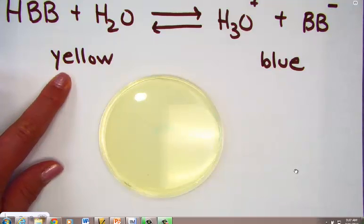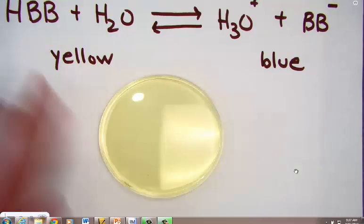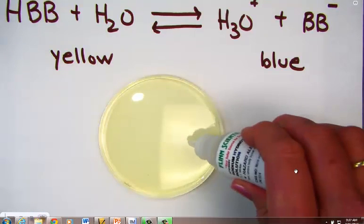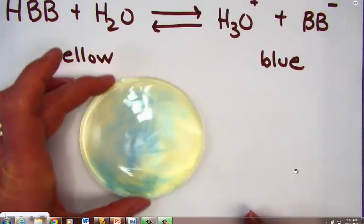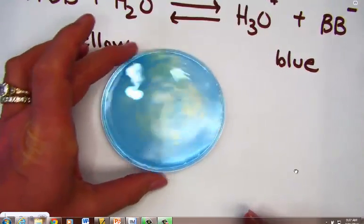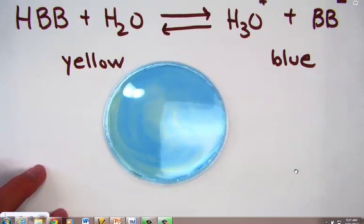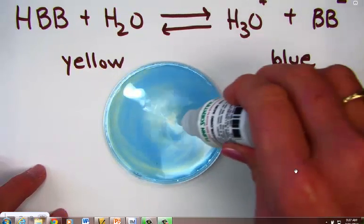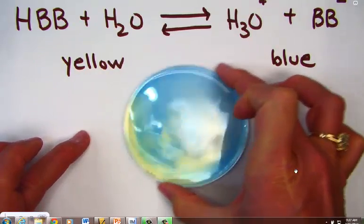Le Chatelier says: when I create a disturbance in an equilibrium, the system will shift to alleviate that stress or disturbance. We could add NaOH, and we see the blue color beginning to appear — this lets me know I am on the right side of this equilibrium. Apply this stress, add acid, and we're back to the left side of our equilibrium.